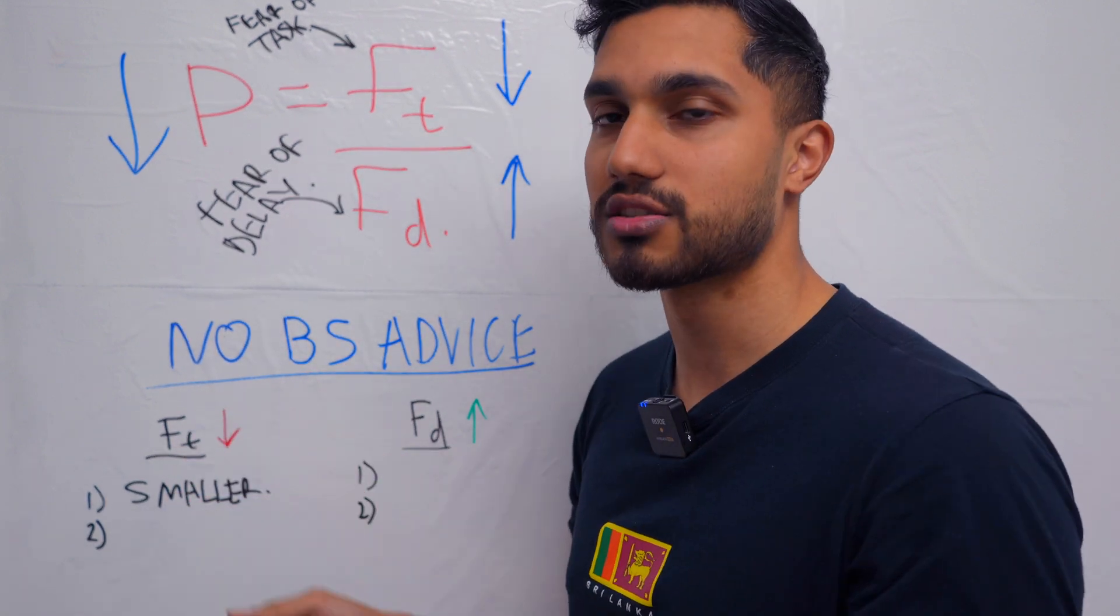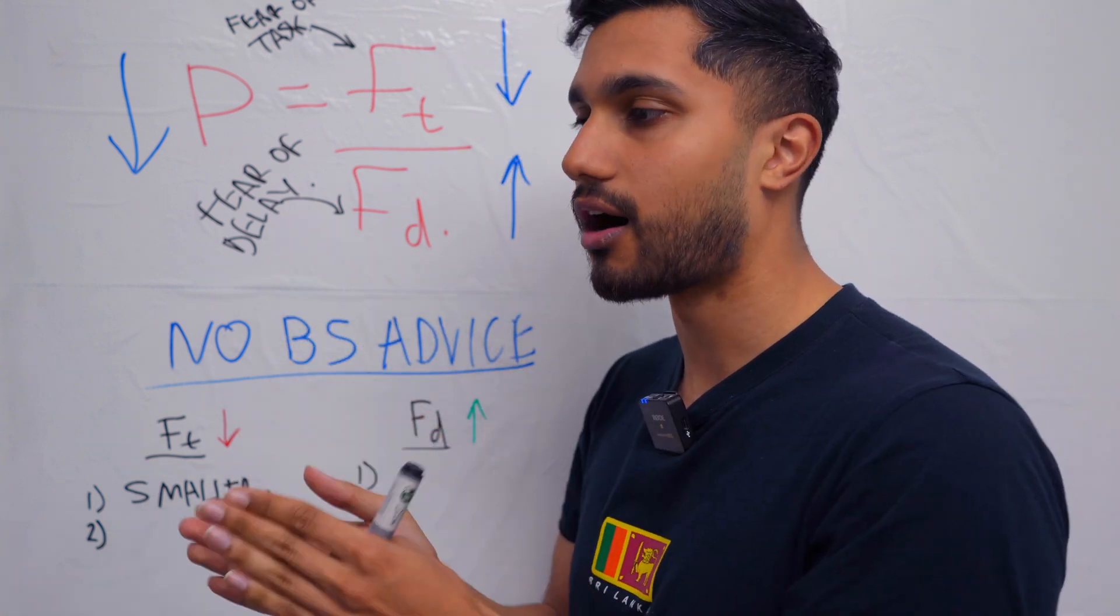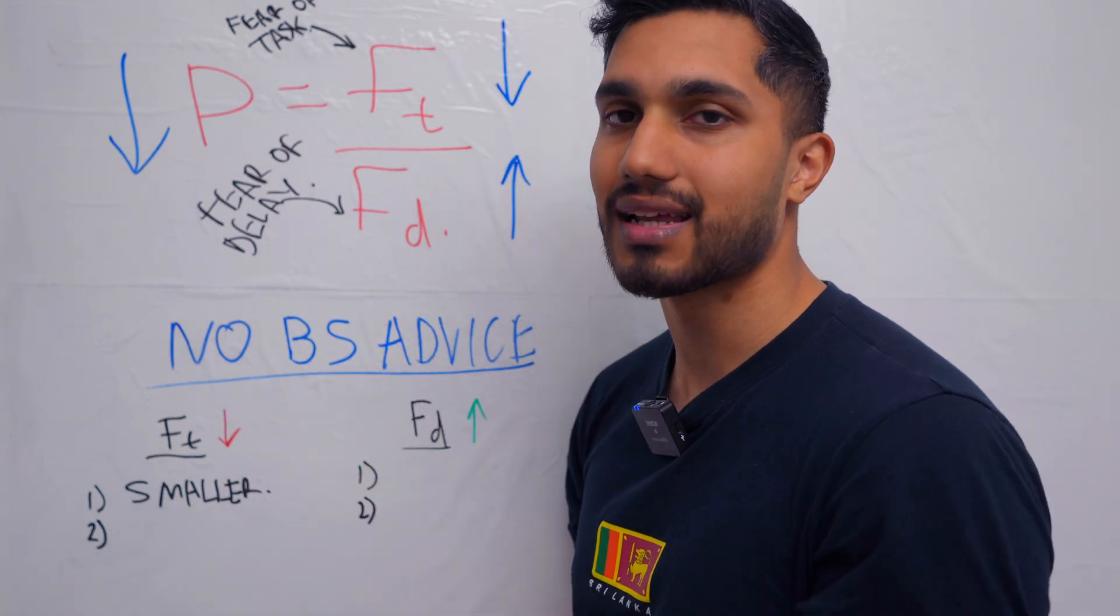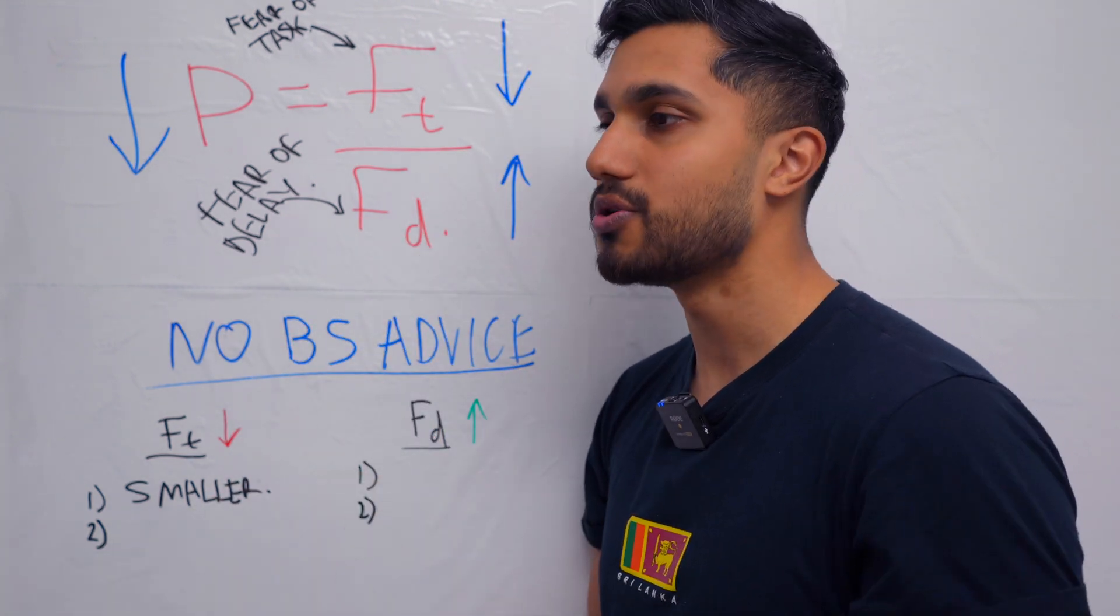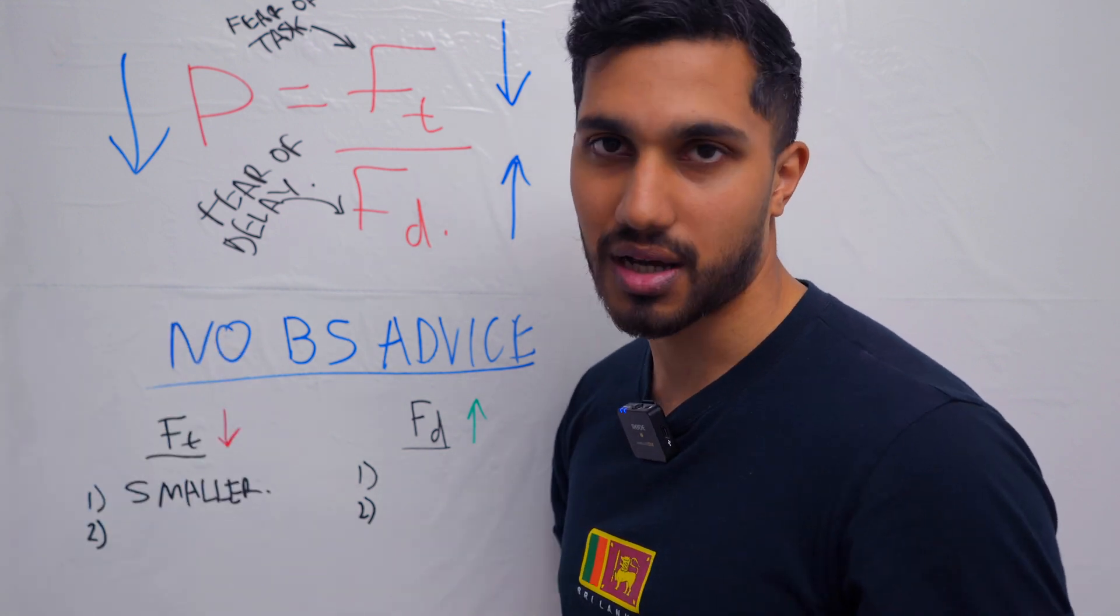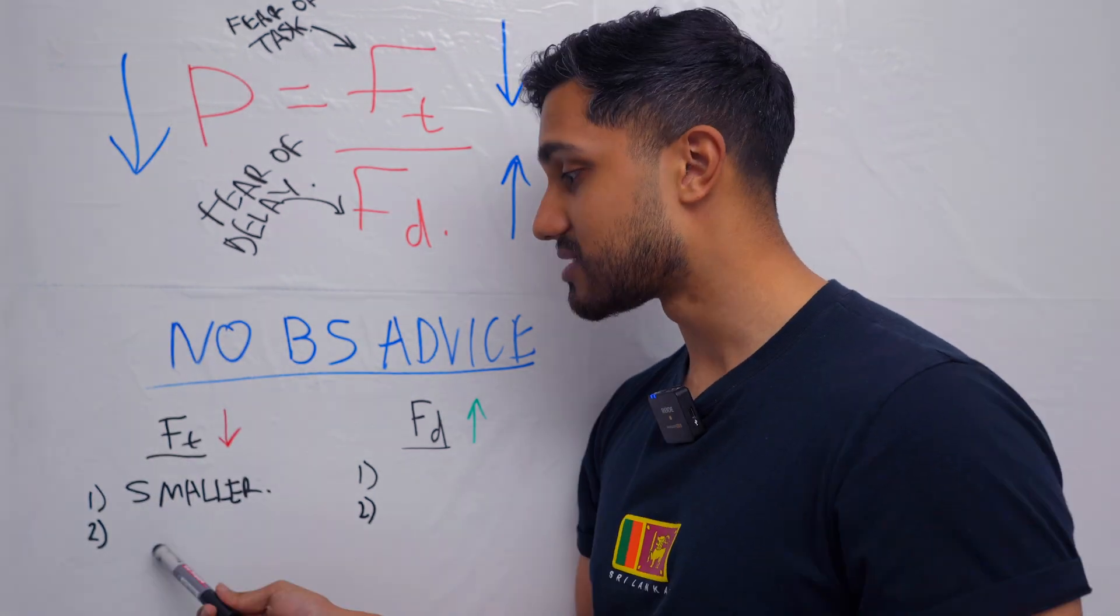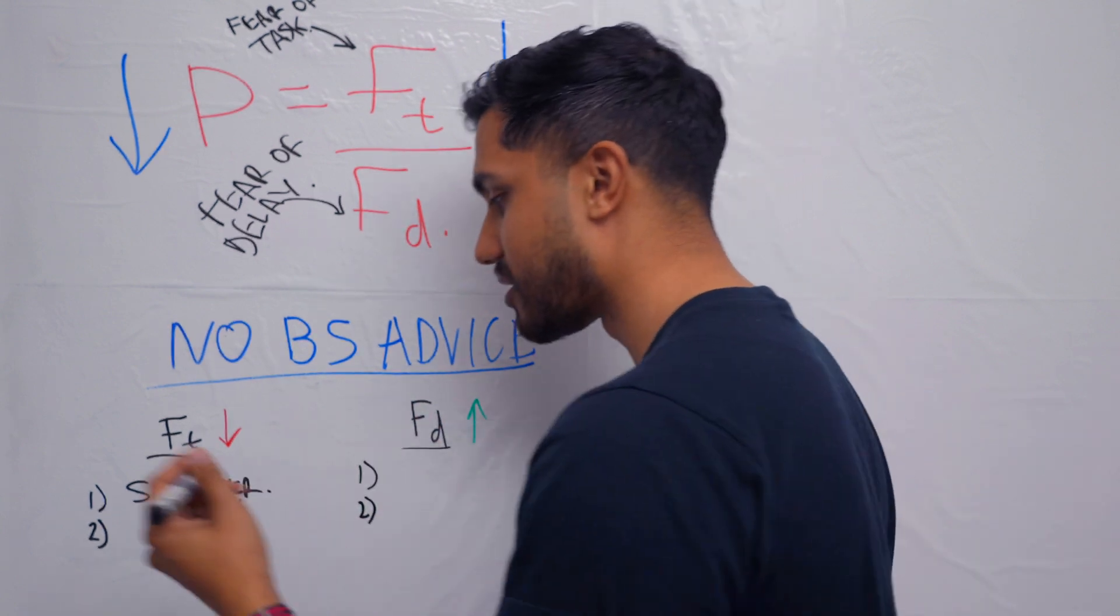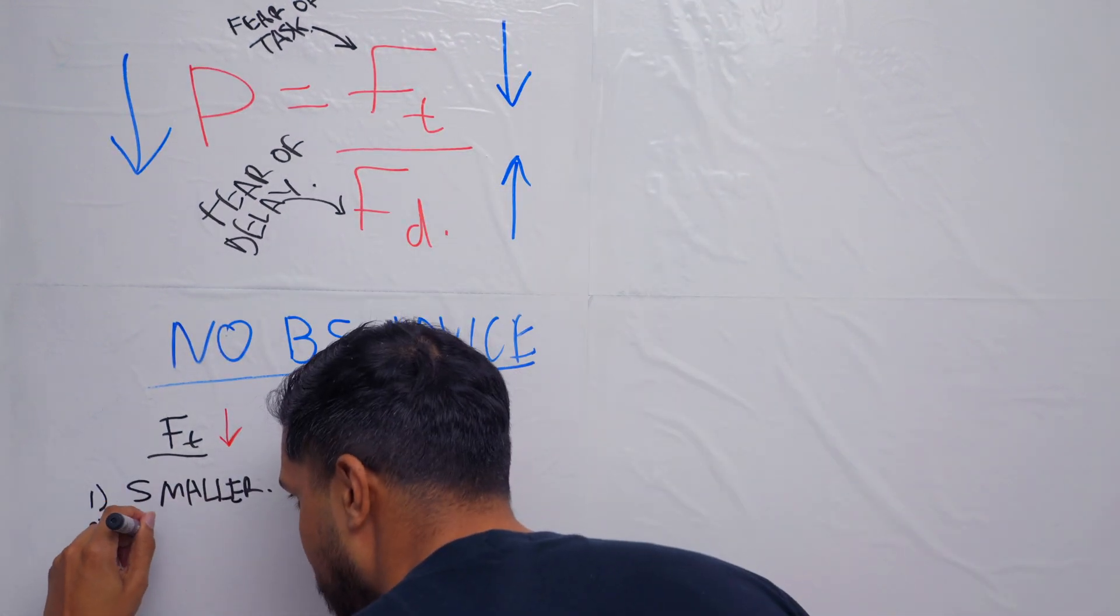So how do you make it smaller? If you have a hundred questions to do, break it down, chunk it up for each particular day. So if you need to do a hundred questions in a week, then do like 20 questions per day. And the next thing you can do is that you can do it with your friends. Make it fun.